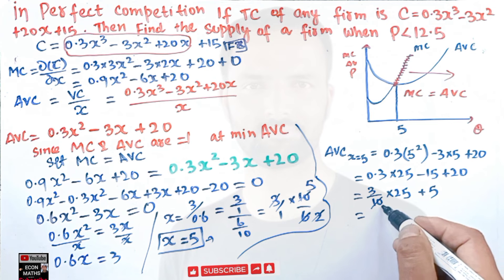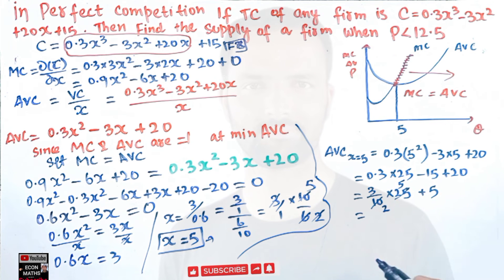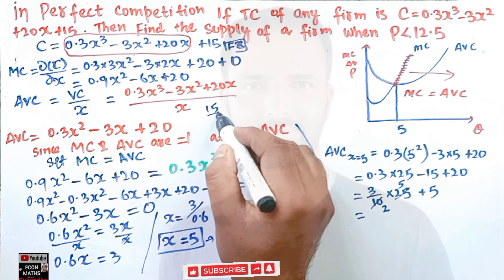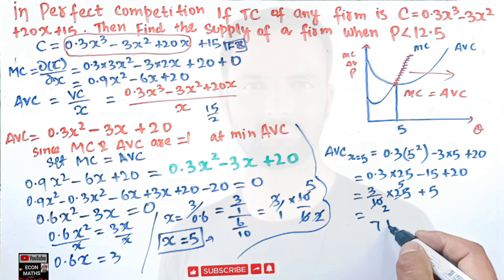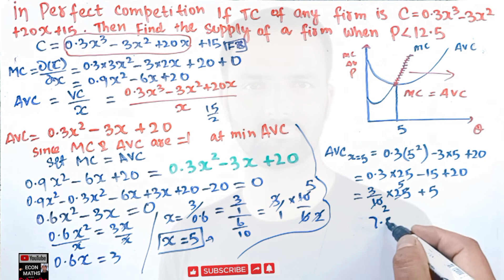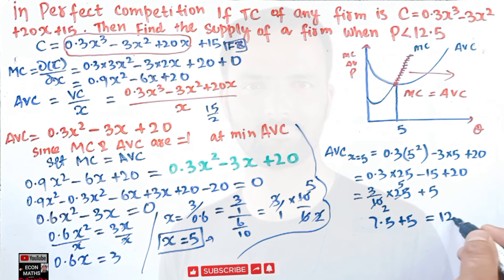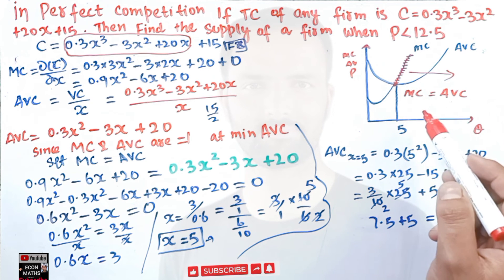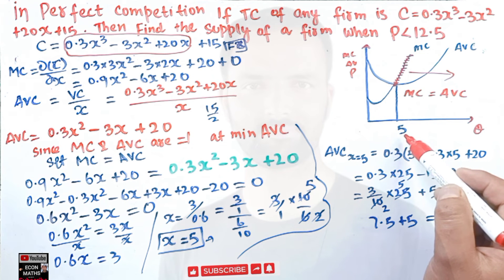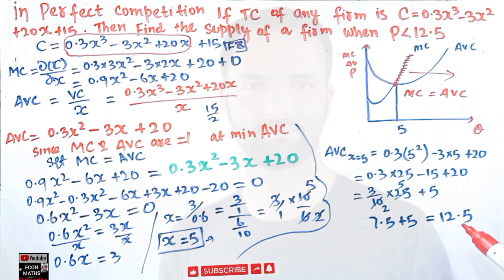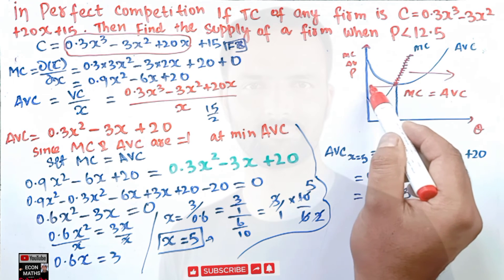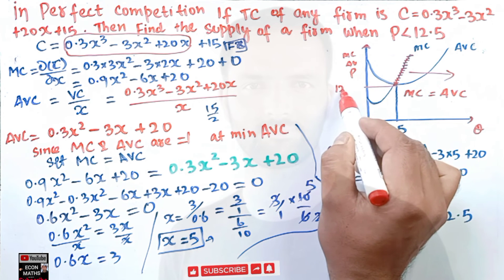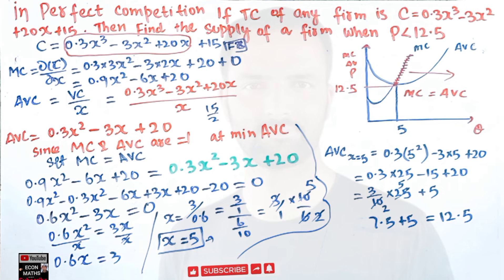Calculating: (3/10) × 25 = 75/10 = 7.5, minus 15 + 20 = +5. So AVC(5) = 7.5 + 5 = 12.5. Therefore, corresponding to an output level of 5, the minimum AVC = 12.5.